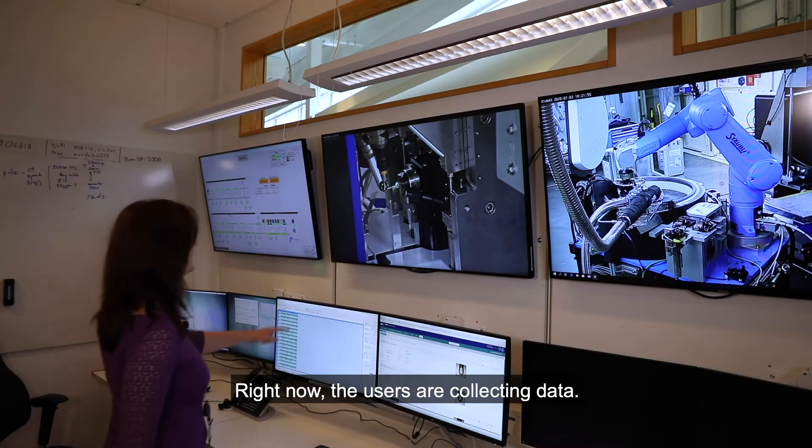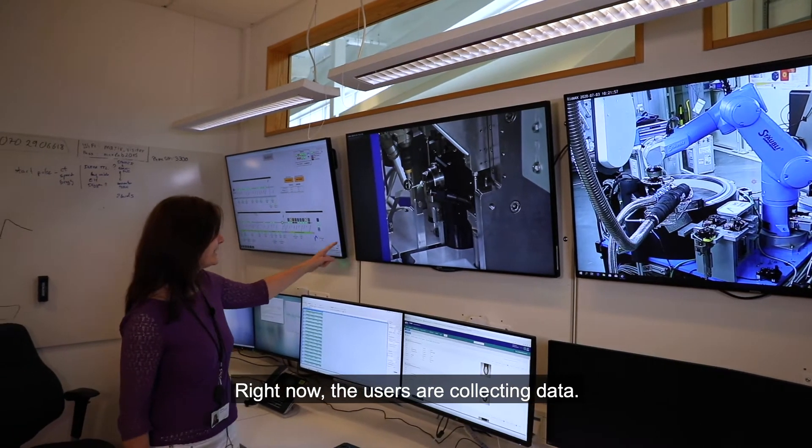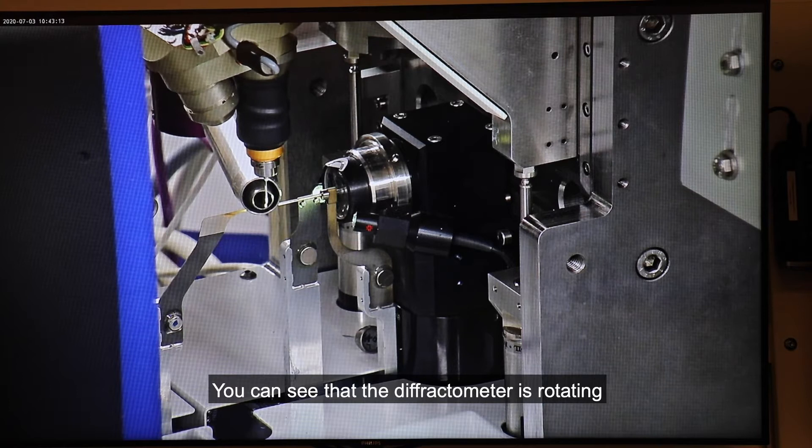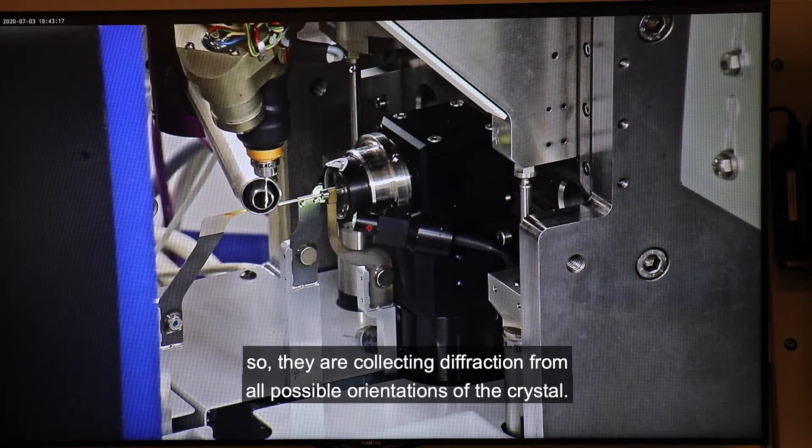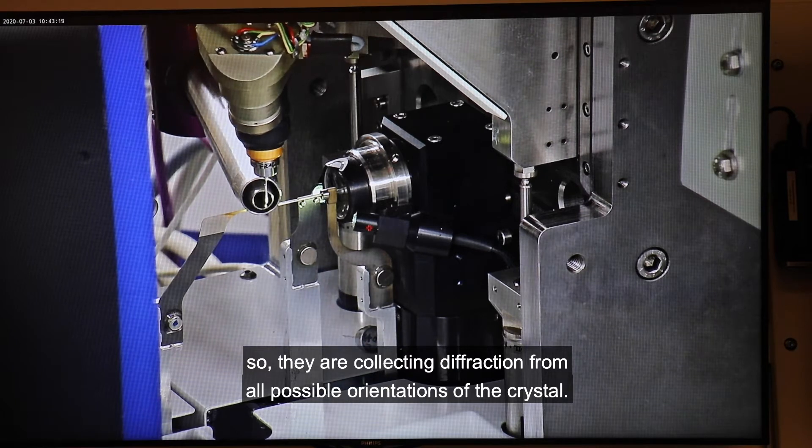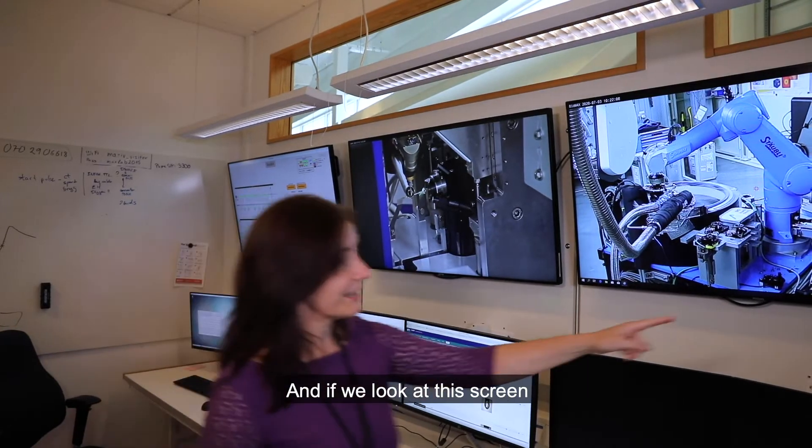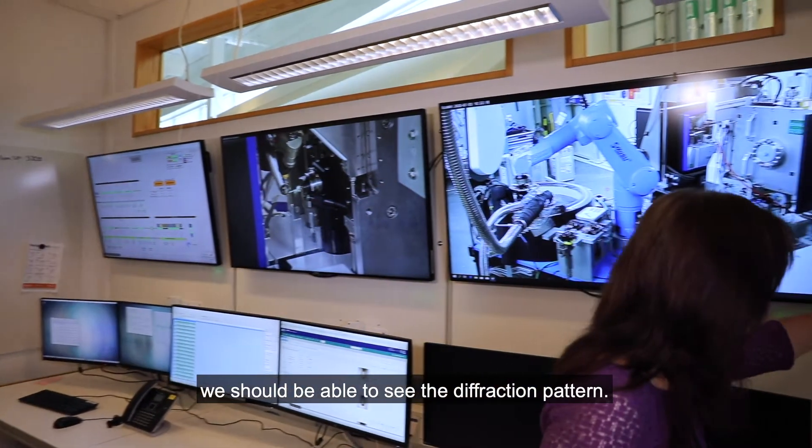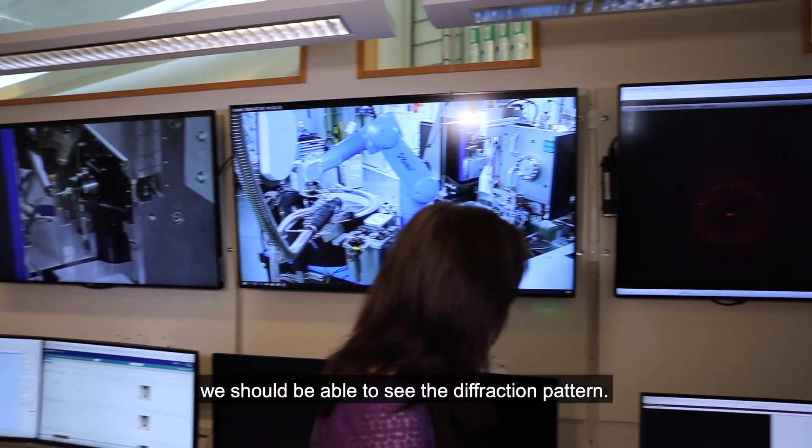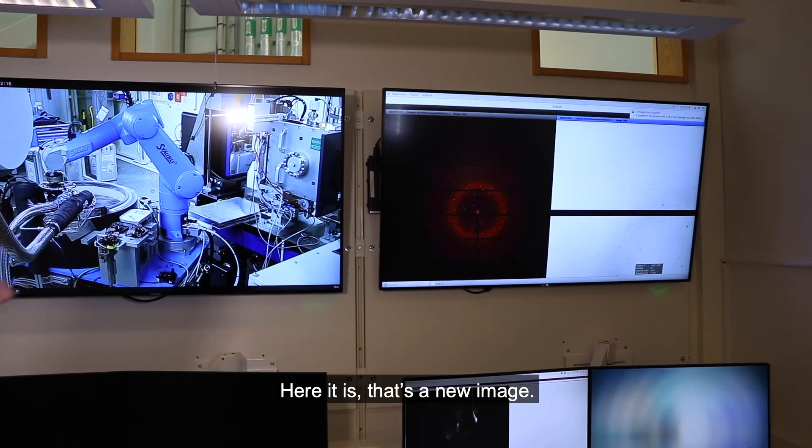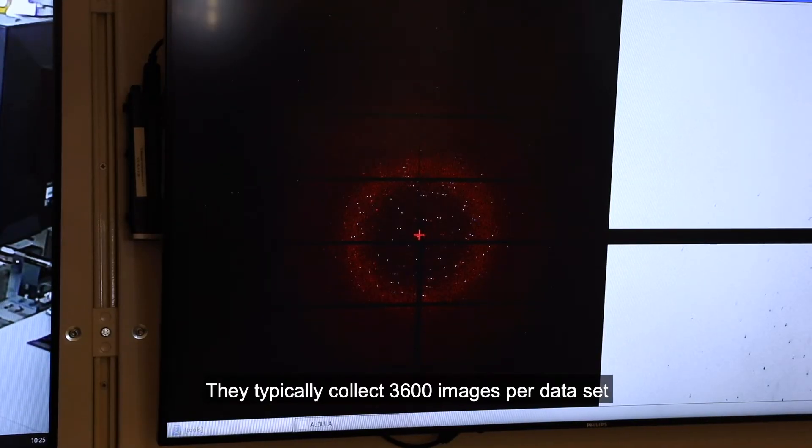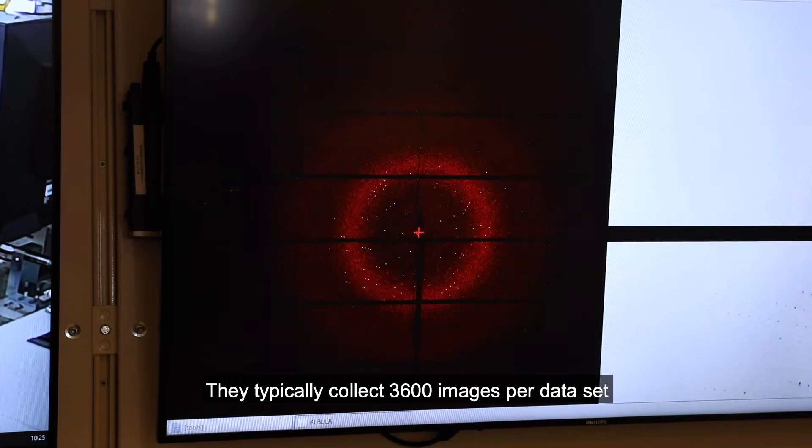Right now the users are collecting data. You can see that the diffractometer is rotating. So they are collecting diffraction from all possible orientations of the crystal. And if we look at the screen we should be able to see the diffraction pattern. Here it is. That's a new image. They typically collect 3600 images per data set.